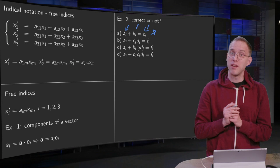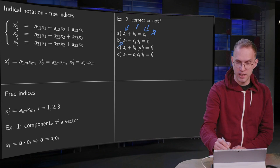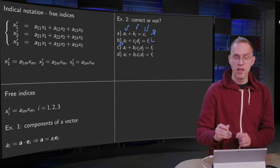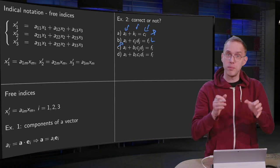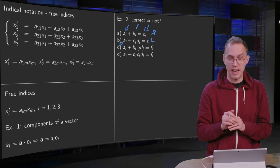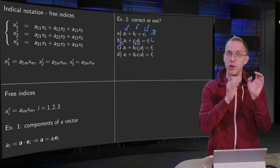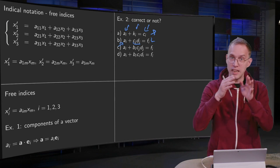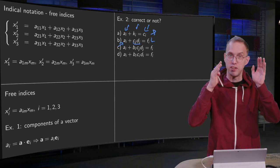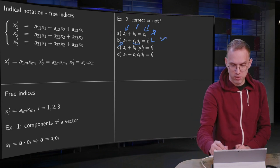Let's see what we have in expression b. We have ai here, so we are left with an i, and fi there—that's okay. However, we also have cj dj, so after summing you don't have anything left, so there is no i over there, only a number. So ai plus a number equals fi, and that's not correct because the indices left and right have to balance. This one is not correct.